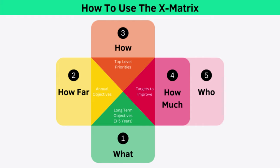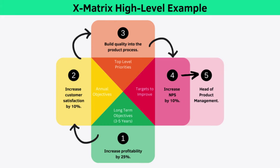First, you enter your long-term objectives — the equivalent of your breakthrough objectives in Hoshin Planning. Next, you enter your annual objectives that will progress you towards these long-term objectives. Third, you enter the projects or initiatives that will help you achieve your annual objectives. Fourth, you enter the KPIs — how will you know that each initiative has succeeded? These are often called your 'how much.' Finally, you enter the person who is ultimately responsible for each initiative.